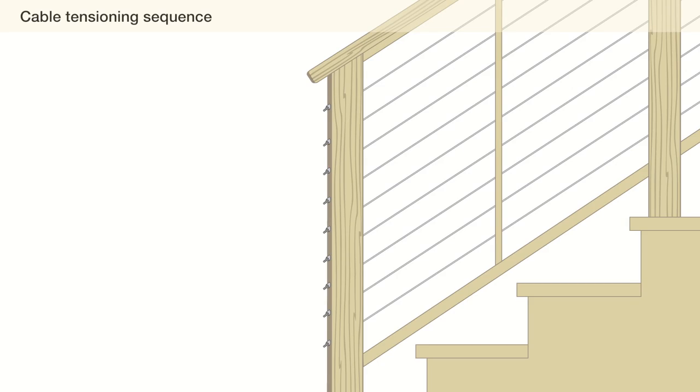Be sure to follow the recommended tensioning sequence to help minimize stress on the railing frame and easily adjust uniform tension across all of the cables. Start at the center cable and alternate until all cables are tightened.